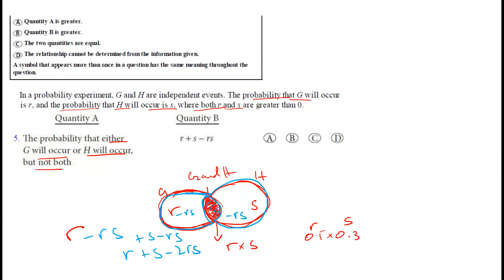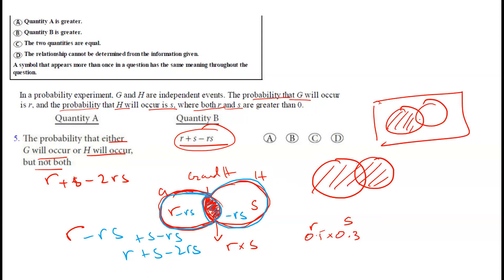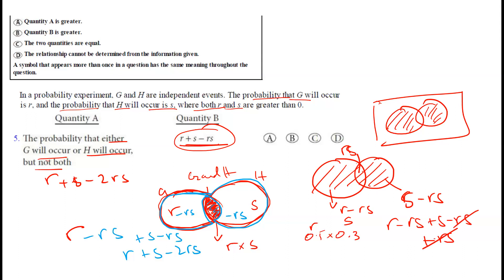Quantity A is r + s − 2rs (either G or H but not both). Quantity B is r + s − rs (G or H or both). The region r + s − rs includes the middle overlap, whereas r + s − 2rs excludes it. We can verify: (r − rs) + (s − rs) + rs = r + s − rs. Since Quantity B includes the extra rs term, Quantity B is greater than Quantity A — option B is correct.